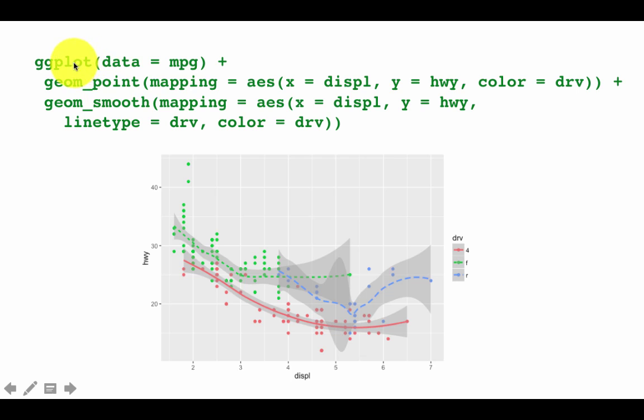So we said ggplot data is MPG. That is fine. Then we said geom_point and color equals drv. So we got the scatter plot with the color based on drive. And here geom_smooth, the linetype is based on drive. The color is based on drive. Okay. So notice how it made the legend based on both the linetype and the color. Okay. So it did that. That is pretty powerful. Okay. So you can add these things. What this is showing you is that you could have multiple geoms on the same plot on different layers. And if you have the aesthetics mapping things in both the geoms based on the same variable, then it intelligently converts the legend as well, which is pretty smart.